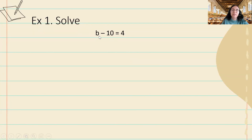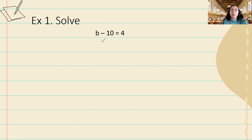Remember, when we're solving for any variable, we want to get it by itself. So we want b by itself. Here we have b minus 10, and this is subtraction, so I'm going to use the inverse of subtraction — the opposite — which will undo it, and that will be addition. So I'm going to add 10 to both sides.